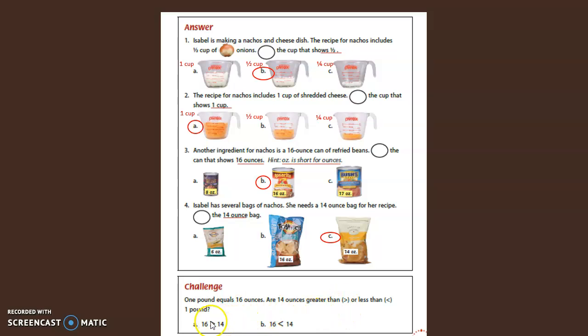So remember, we want the mouth to eat the bigger number. So sixteen equals one pound. We want to know, is fourteen ounces greater than or less than the one pound? So is it A or is it B? Yes, it's A. This one shows that sixteen is greater than fourteen.